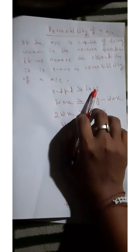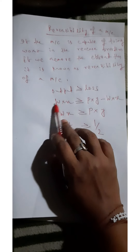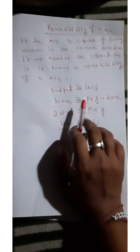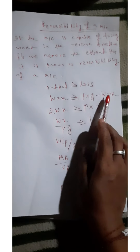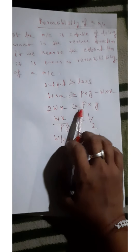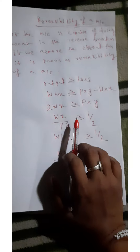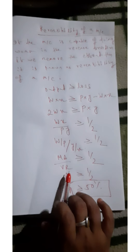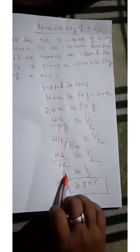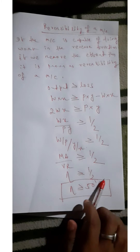Reversibility means if a machine is capable of doing work in the reverse direction if we remove the effort, it is known as reversibility of a machine. The condition is: output W × X — load multiplied by distance moved by the load — should be greater than the loss, which is input minus output (effort × distance moved by effort minus output work). Rearranging gives efficiency = MA/VR ≥ 1/2. This is the condition of reversibility of a machine.